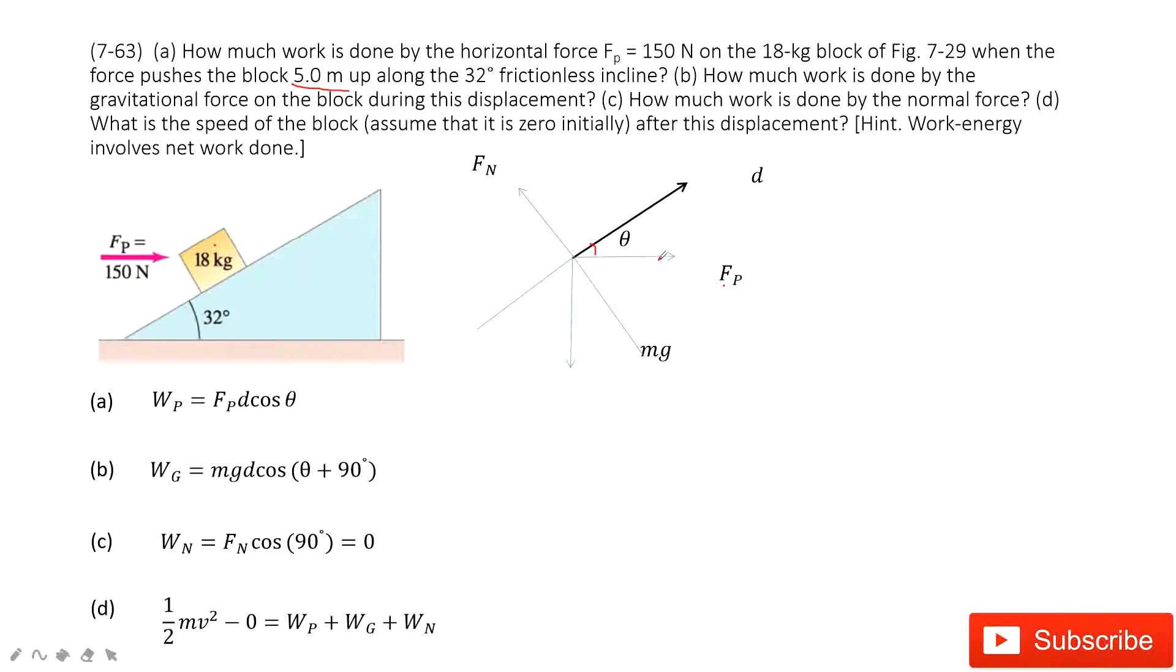So we need to find work Fp with the d. So Fp, d, cosine theta. Very easy. See, Fp is given, d is given, theta is given. So we can very easily find the work done by this Fp.